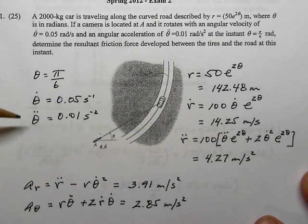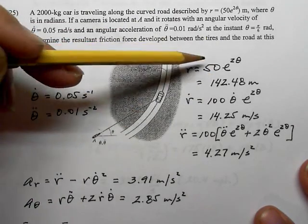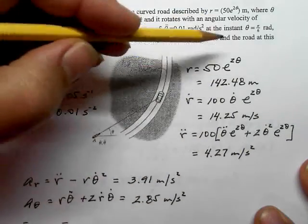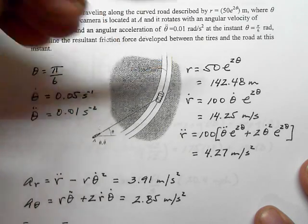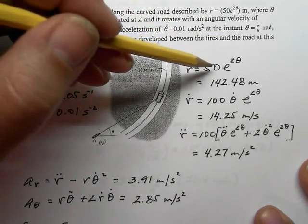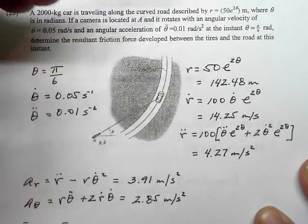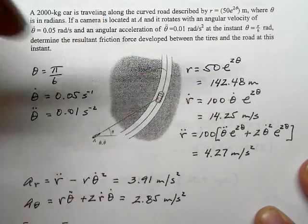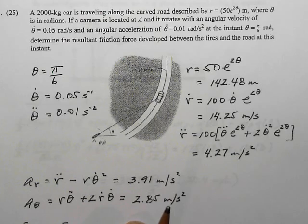We were given that θ = π/6, θ-dot = 0.05, and θ-double-dot = 0.01. The shape of the curve is r = 50e^(2θ). Plugging in θ = π/6 gives us r = 142.48 meters. Then we need r-dot, which means taking the derivative of r with respect to time: dr/dθ × dθ/dt. The derivative of 50e^(2θ) with respect to θ is 100e^(2θ), and multiplying by θ-dot gives us r-dot = 14.25 meters per second.